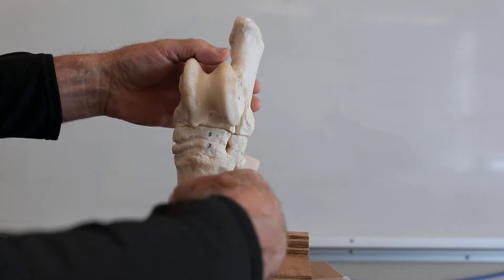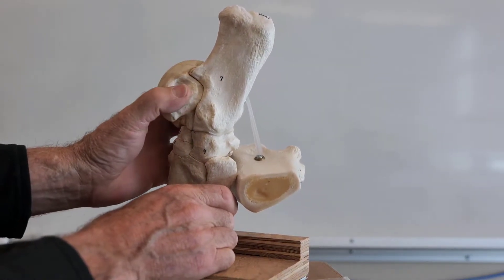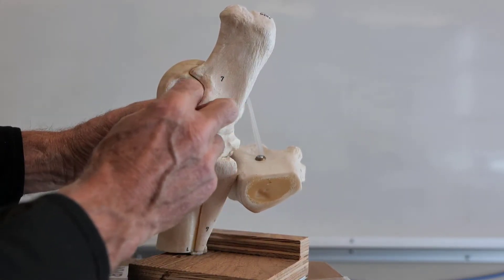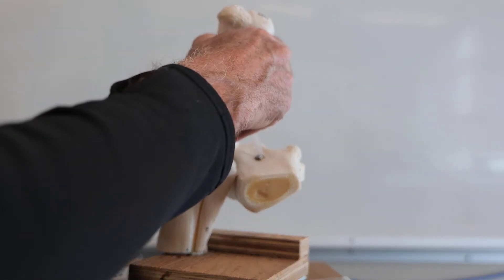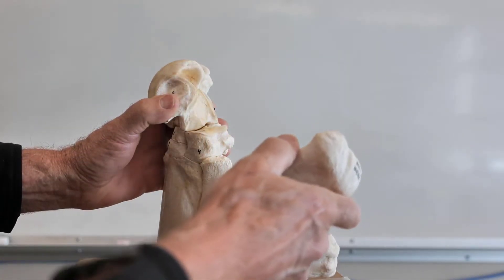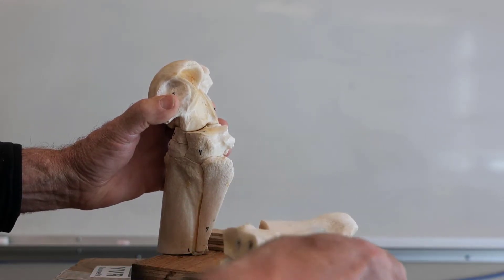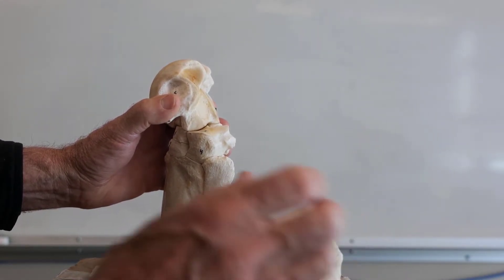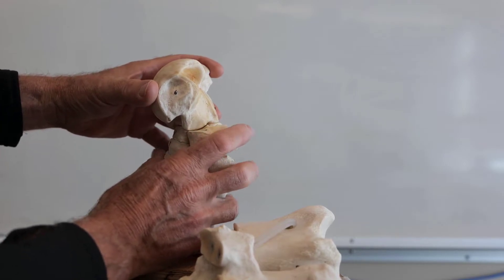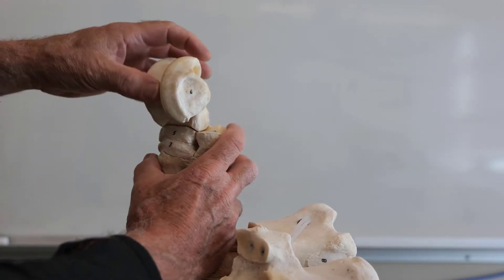Directly behind the talus on the lateral side, you can see how the calcaneus fits into the side and back of the talus. The talus is the most irregular of all the bones of the joint, with two large ridges and a groove in between.